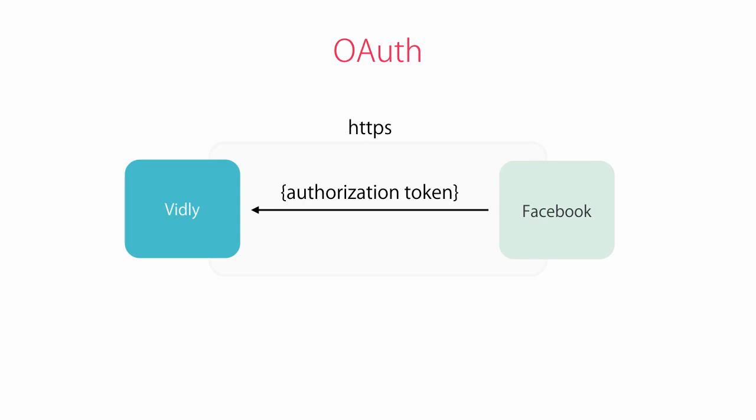On Vidly, we get this authorization token and send it back to Facebook with our API key and secret. We do this because a hacker may send a random authorization token to Vidly, so we need to verify that it really came from Facebook. That's why we send it back and tell Facebook: hey, it's me, Vidly — did you really send me this authorization token? Facebook says yes, and then it will give us an access token. With this access token, we can access some parts of the user's profile — the parts we have permission to access.